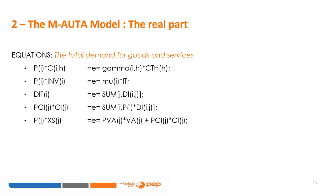The demand equations include: first, household demand C_IH; second, the demand for investment purposes INV_I; third, the total intermediate demand; fourth, the industry's total intermediate demand; and fifth, the income-equals-expenditure condition for industry J, also known as the zero profit condition.